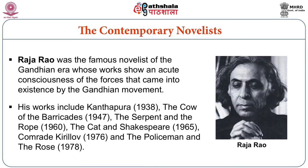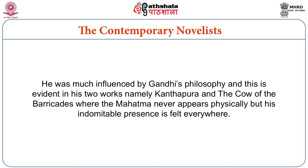Raja Rao was the most famous novelist of the Gandhian era and his works reflect the acute consciousness of the forces that came into existence around the Gandhian movement and struggle for freedom. His works include Kanthapura, The Cow of the Barricades, The Serpent and the Rope, The Cat and Shakespeare, Comrade Kirilov and The Policeman and the Rose. Raja Rao was greatly influenced by Gandhi's philosophy, evident in Kanthapura and The Cow of the Barricades. He won the Sahitya Akademi Award for The Serpent and the Rope and has also been honoured with the Padma Bhushan.